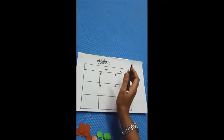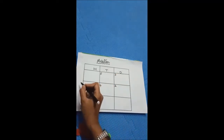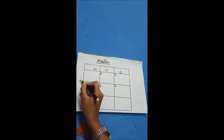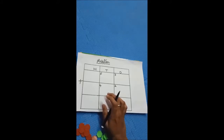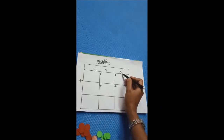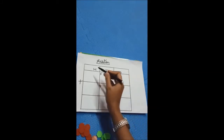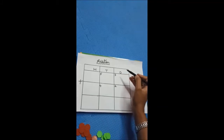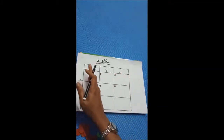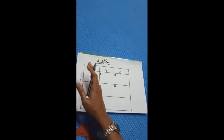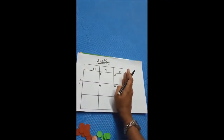For addition, what symbol will we use? The plus symbol. So this plus symbol we will use for addition. Shall we do the activity now? Always we have to start from the ones place. Here I have written ones, tens, hundreds. Always we have to start from the ones place and move towards the left. Shall we do the activity starting from ones place?